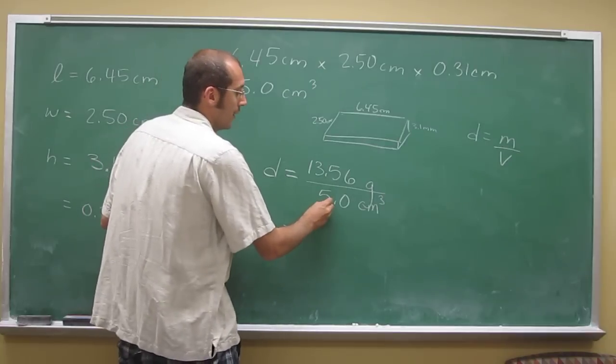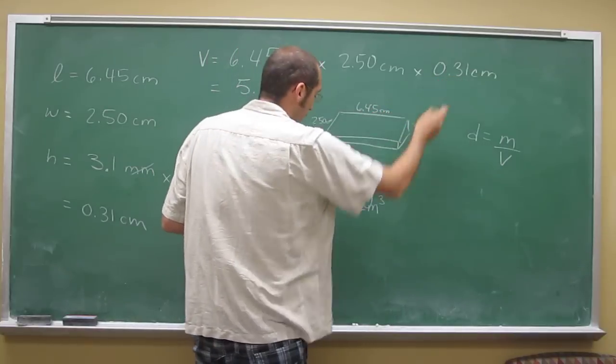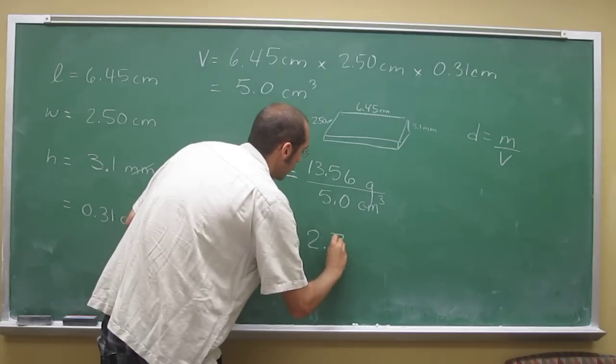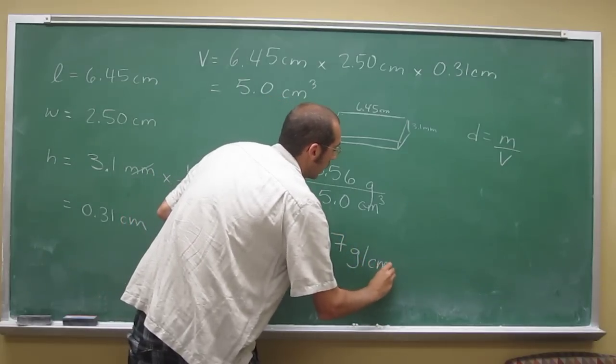But this number only has two sig figs. In fact, we're actually going back to this number only having two sig figs, so our answer will be 2.7 grams per cubic centimeter.